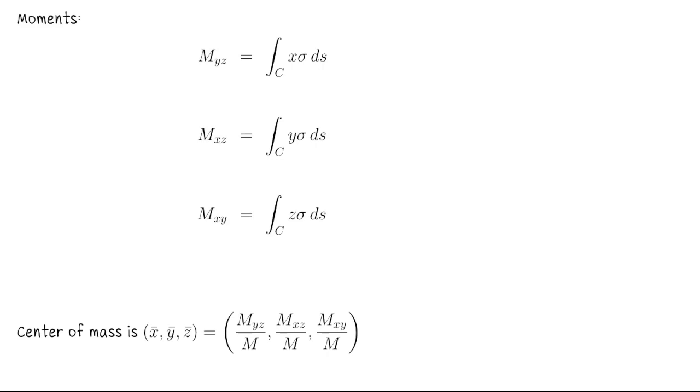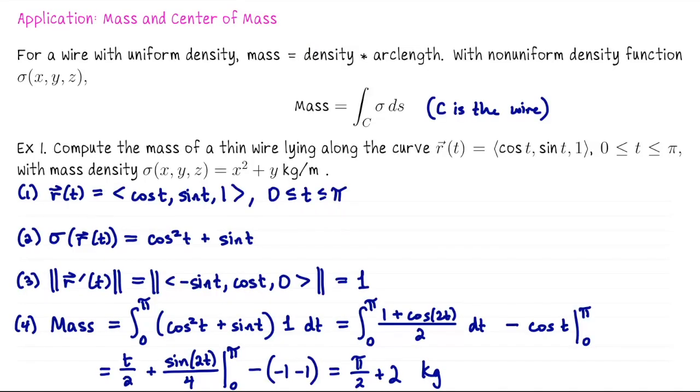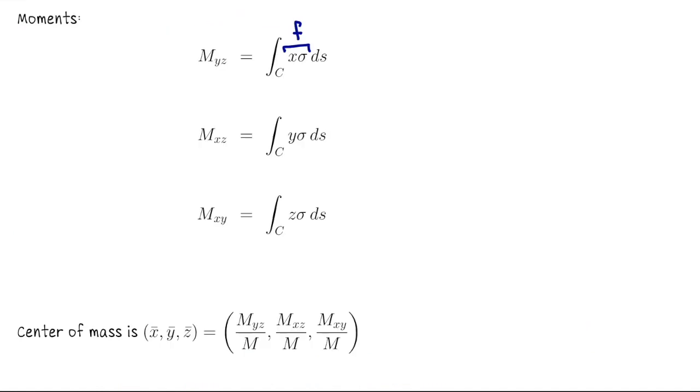I want to mention here that when you set up these moment calculations, you need to treat, say, x times sigma as the entire function f. If we return back to this example, x times sigma, you would need to evaluate x sigma on r of t. So it would be cosine squared t plus sine t times the x coordinate of r of t cosine t.